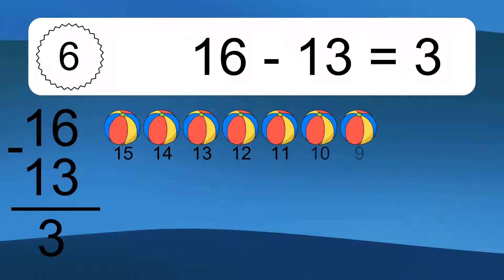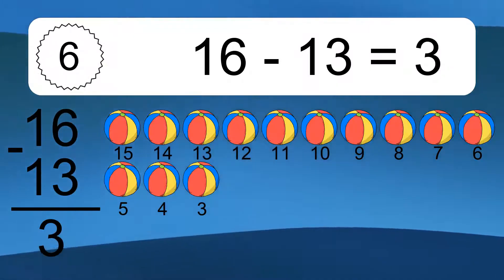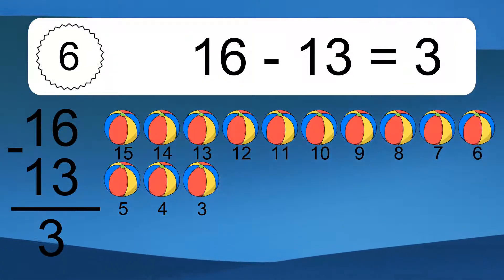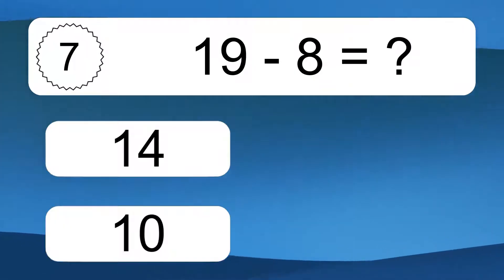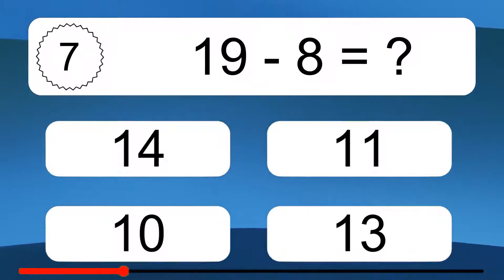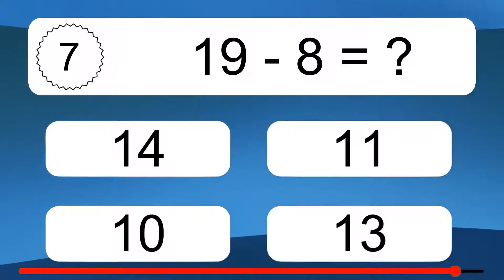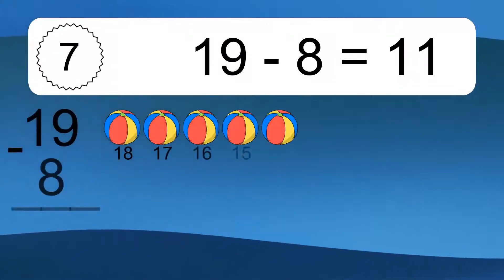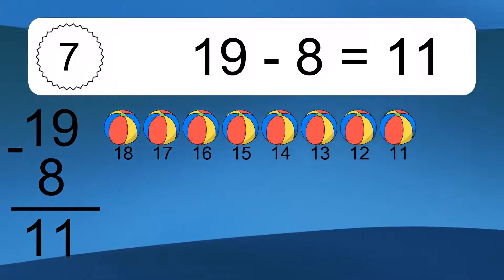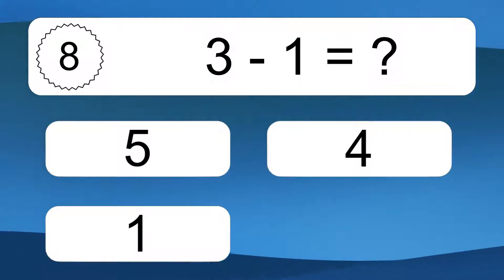16 minus 13 equals 3. Let's count it: 15, 14, 13, 12, 11, 10, 9, 8, 7, 6, 5, 4, 3. 19 minus 8 equals what? 19 minus 8 equals 11. Let's count it: 18, 17, 16, 15, 14, 13, 12, 11.